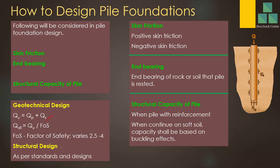Skin friction has two components: positive and negative. For end bearing, depending on where the pile is rested — on rock after socketing or on a hard soil layer — the calculation varies. In the case of driven piles, we mostly try to rest on a hard soil layer, as driven piles are used primarily for lower axial load capacity structures. Structural capacity is found by determining the required reinforcement area and sizing the pile accordingly.